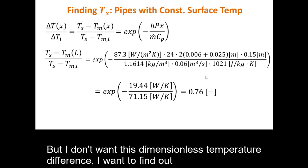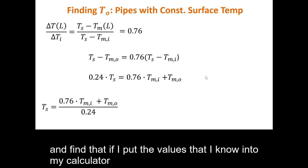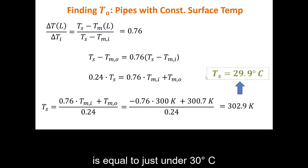But I don't want this dimensionless temperature difference. I want to find out what Ts is. So, I can isolate Ts, and find that if I put the values that I know into my calculator, that the temperature difference, or the temperature on the surface of the heat sink, is equal to just under 30 degrees Celsius.